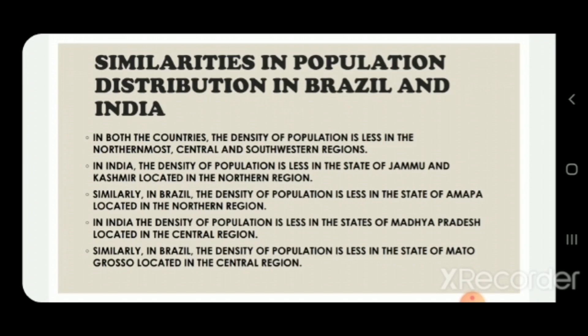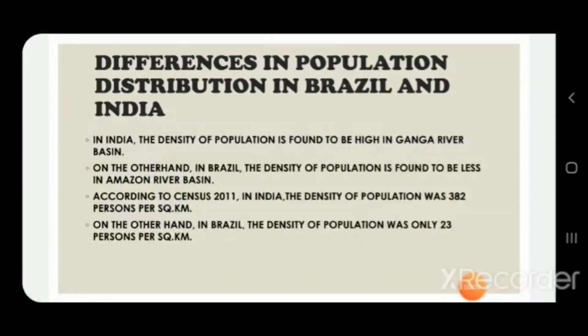Now we will learn about the differences in population distribution in Brazil and India. In India, the density of population is found to be high in the Ganga river basin. On the other hand, in Brazil the density of population is found to be less in the Amazon river basin.